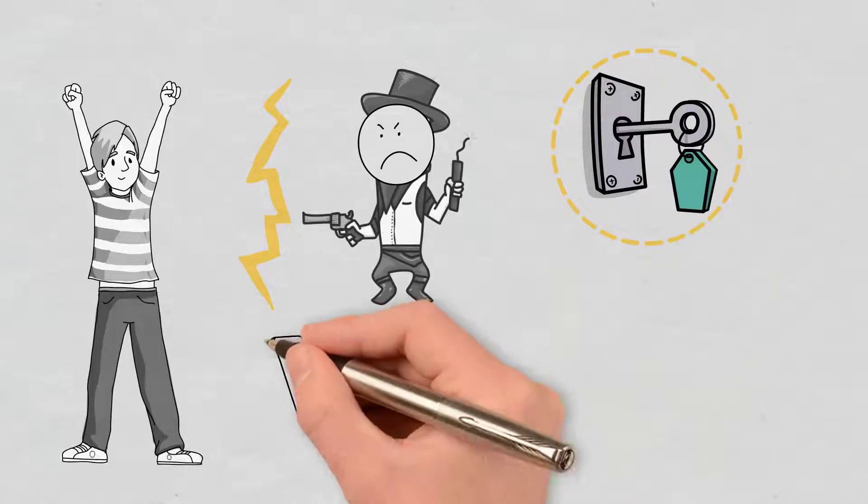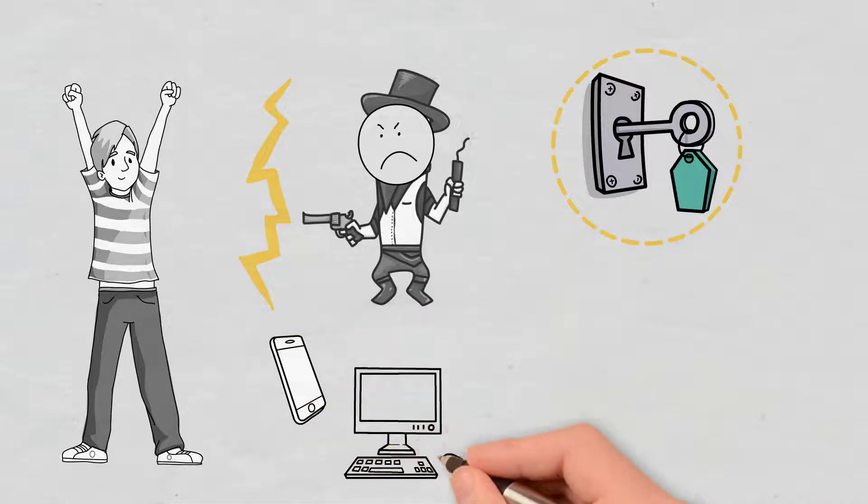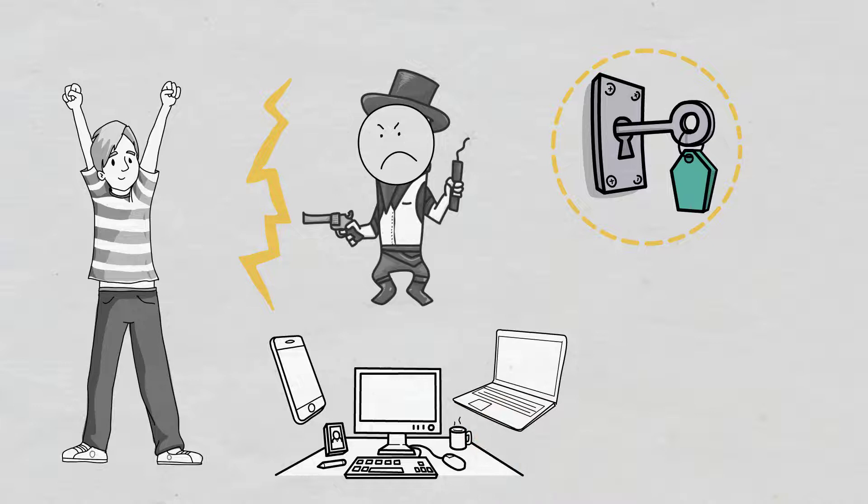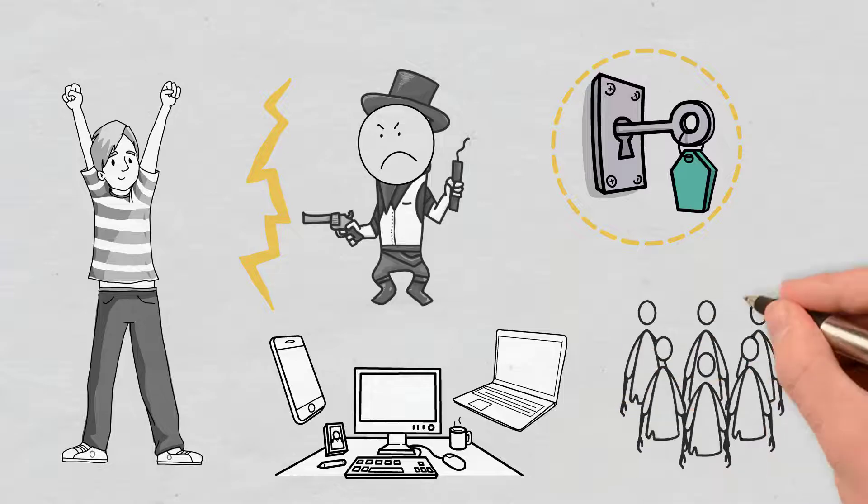In addition, it eliminates the dependency on a single device. For example, one of the private keys can be saved on a smartphone, while another can be stored on a desktop, laptop, and so on. Last but not least, using a multi-sig wallet will reduce the dependency on a single user.